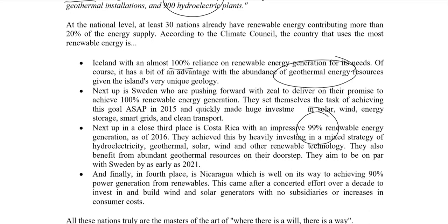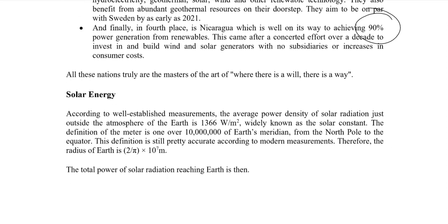Costa Rica said that by 2021 they would be looking at 100 percent renewable energy. Fourth is Nicaragua, where 90 percent of power generation is renewable, largely due to solar and wind generation. These nations show that when there is a will there is a way — if you want renewable power plants, you need to invest in them, and that is what is needed for a 100 percent renewable world.